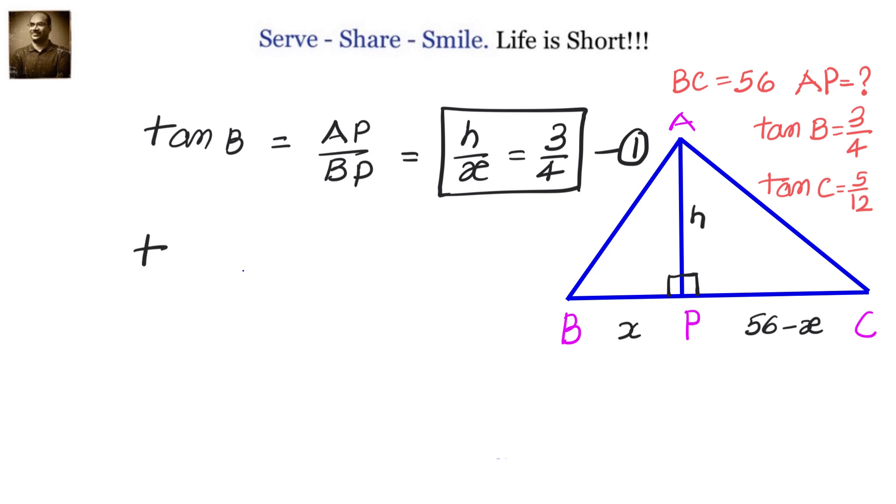Let's go to the next triangle APC. We have tan C equals opposite by adjacent, that is AP divided by CP. AP is H and CP is 56 minus X, and this equals 5 by 12. This is our equation number 2.